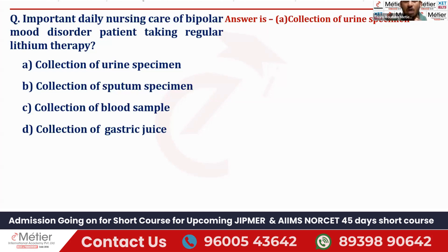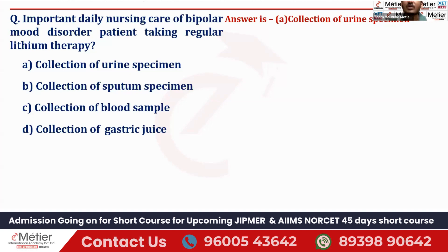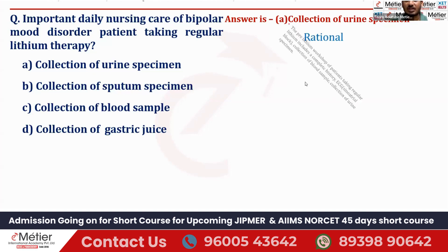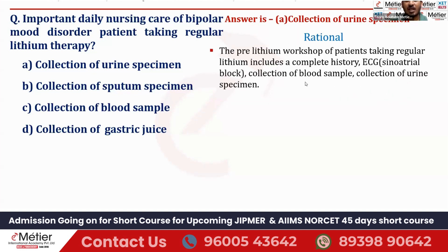So on the whole, the priority goes to the kidney. That's why we have to check the collection of urine specimen — we have to check the renal function test. The same thing is mentioned in the rationale, so you can go through it.